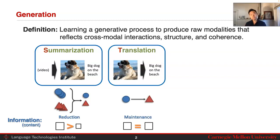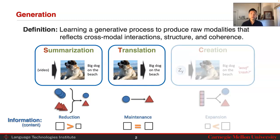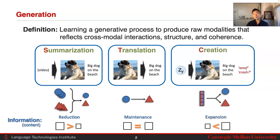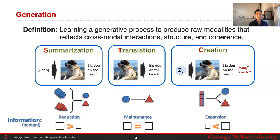There's also translation, where the goal is to maintain information content. For example, taking an image and trying to describe as fully as possible the contents of that image in natural language. And finally, creation — we're trying to go from something small, perhaps one image or perhaps latent variables, into a large set of modalities that are coherent and structured together. The goal here is to expand the information content in our modalities.